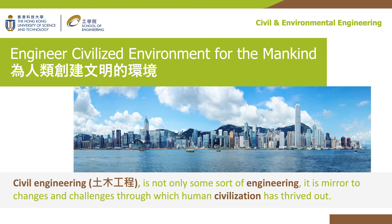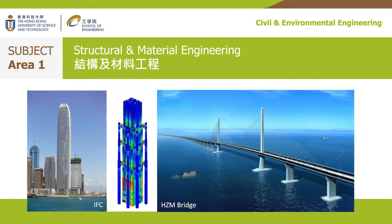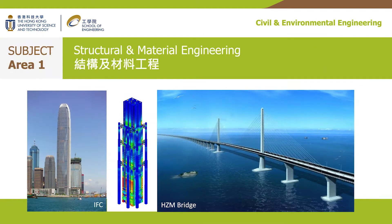What do we study in civil engineering? We can group them into six areas. Area 1 is structural and material engineering. Structural engineers consider the structural requirements of buildings and bridges — what materials to be used, what structural forms in the design, and how much concrete and steel to be used.